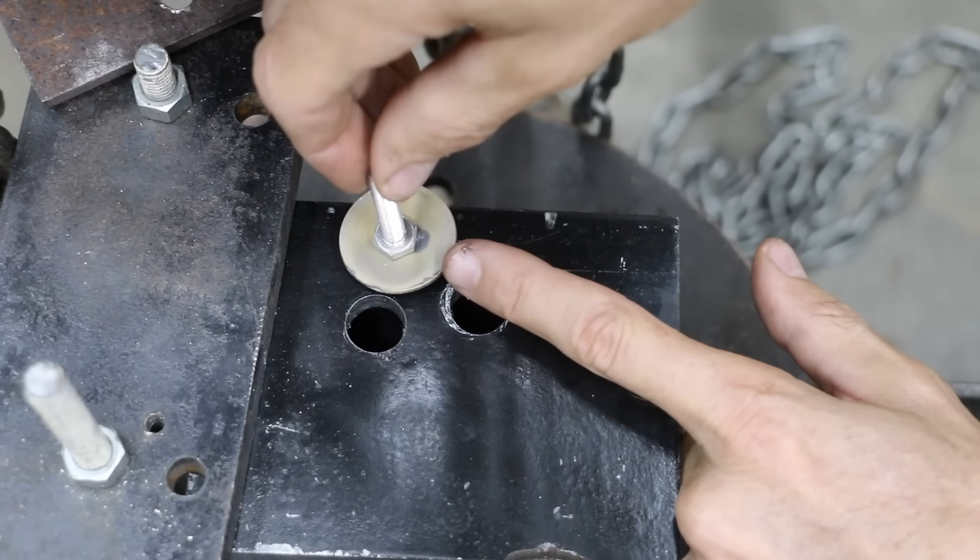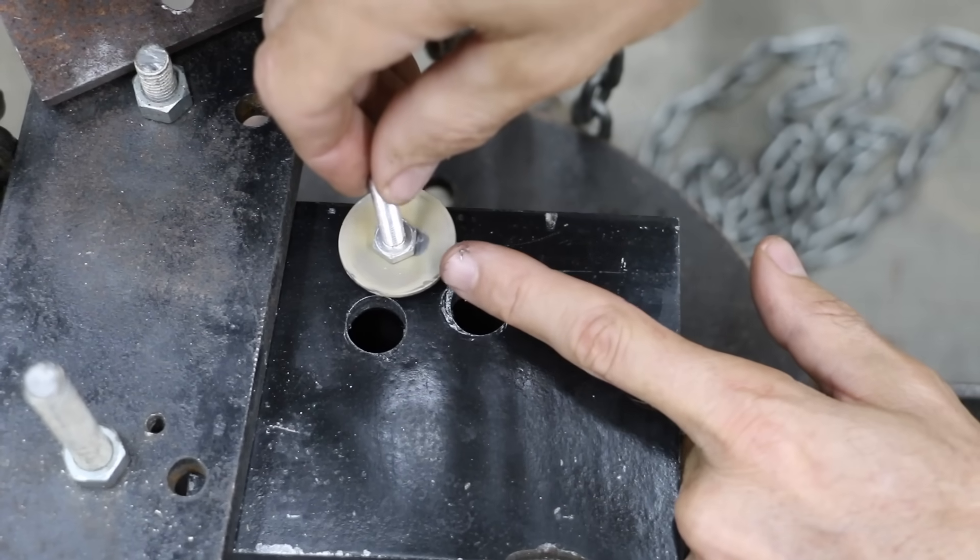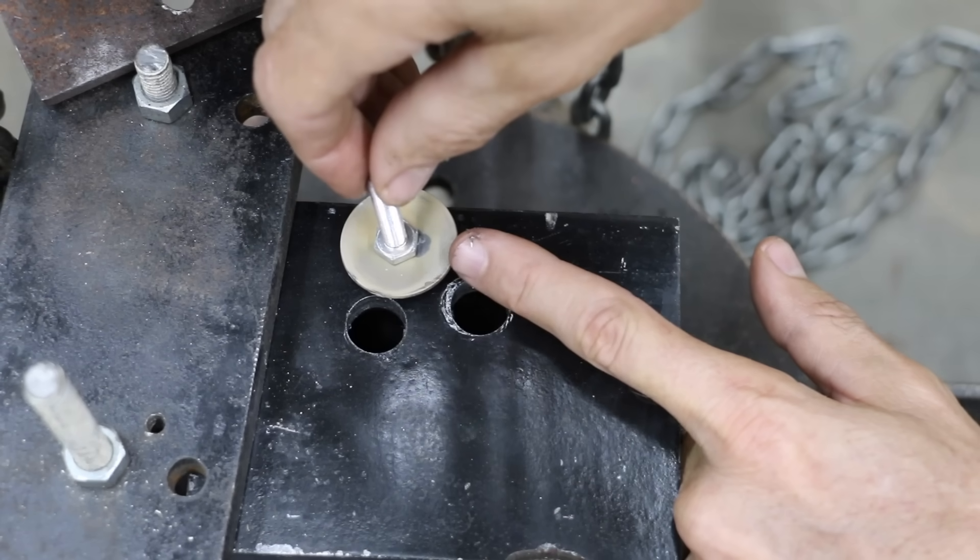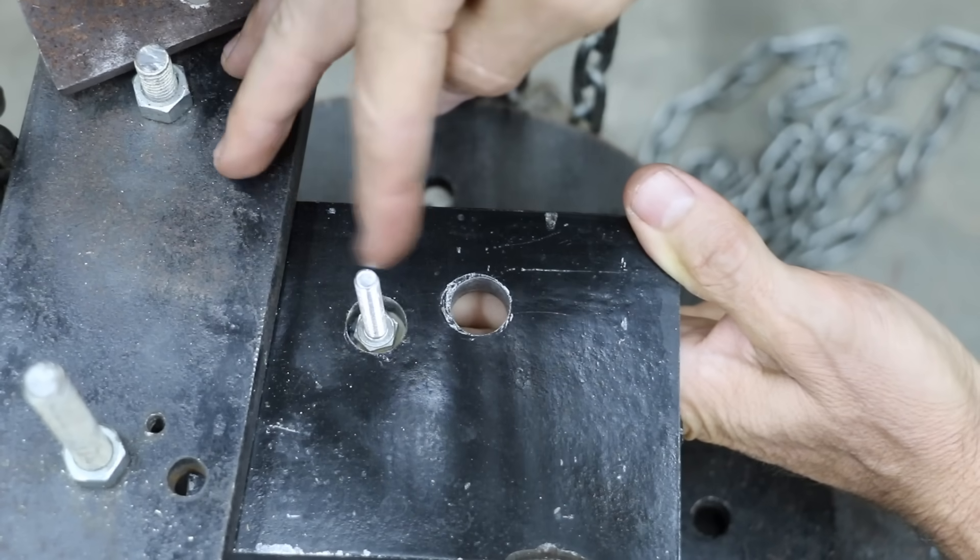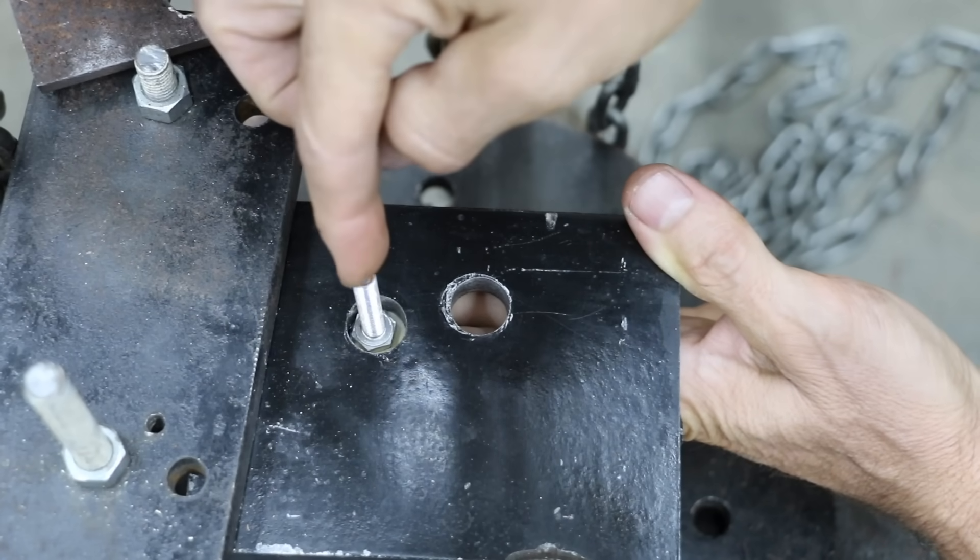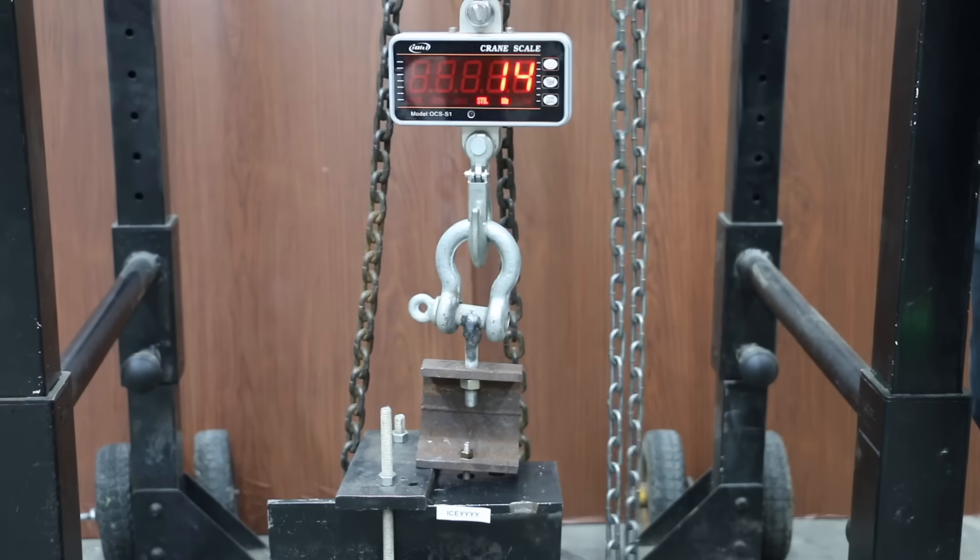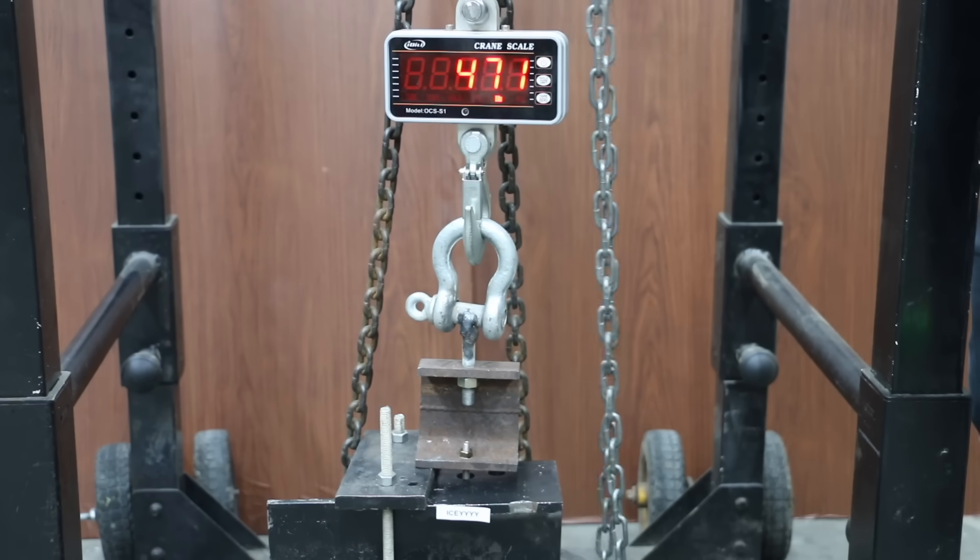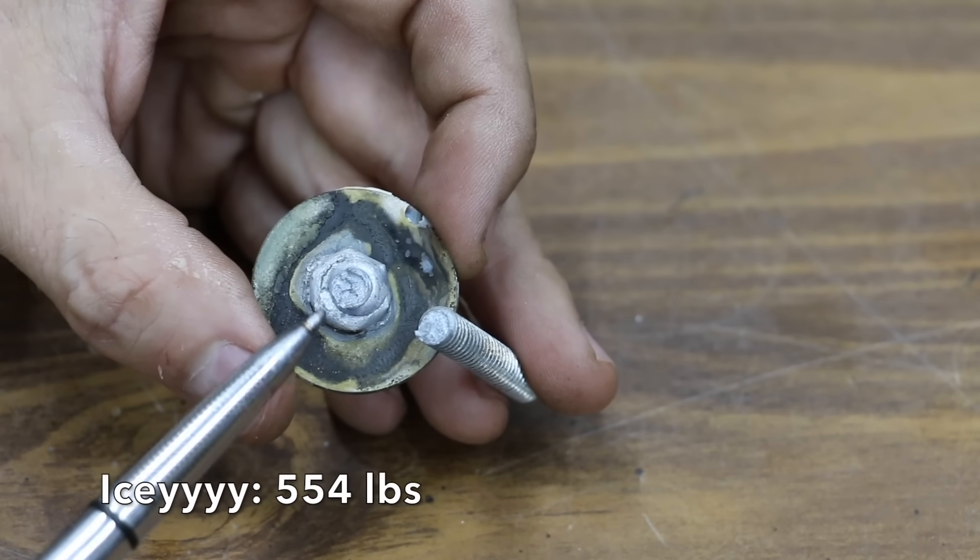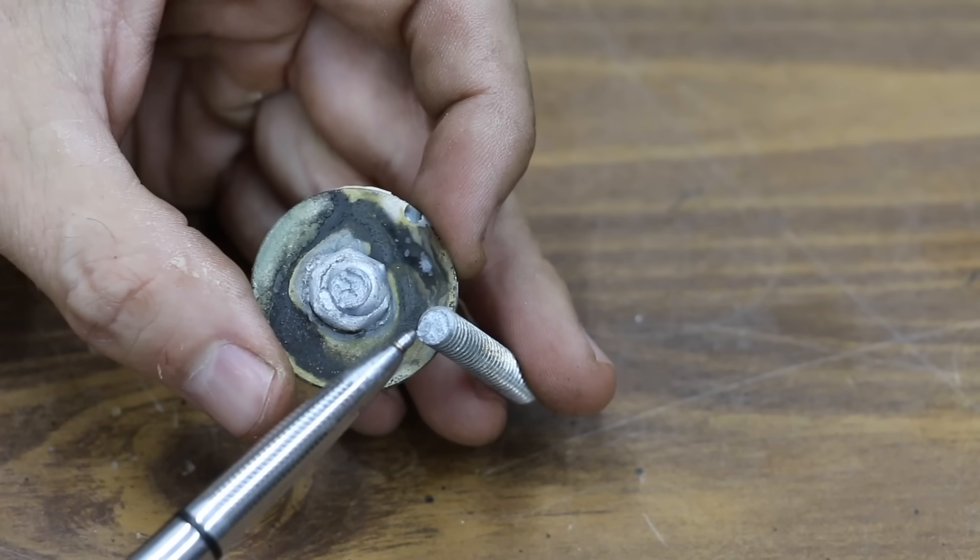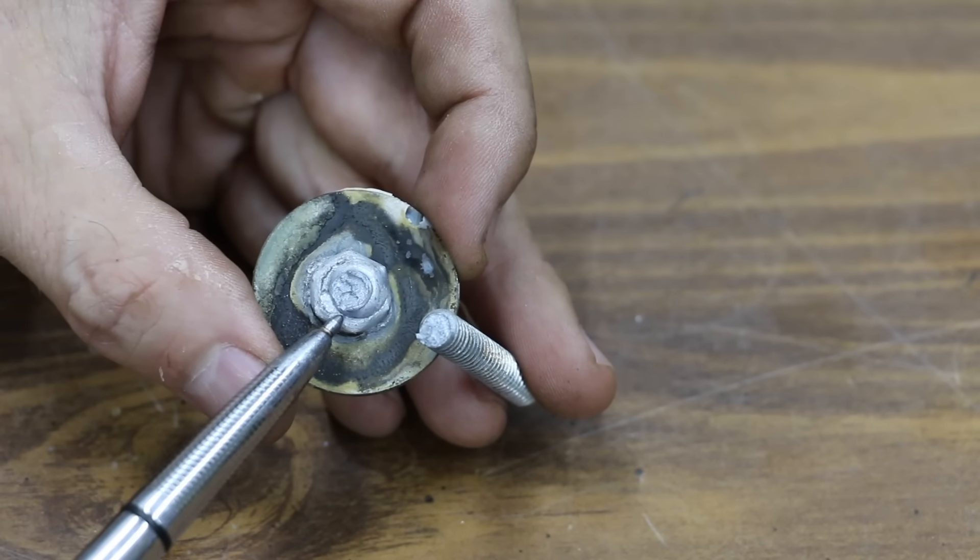In the next test, we'll be pulling this bolt off of this washer. We're going to see how much force it takes and this will tell us how much strength we're getting from our weld. So we've got clearance for the head of the bolt and what we'll do is pull up until this separates. Let's go ahead and test the tensile strength next, beginning with the Icy brand. So 554 pounds is the number to beat. It had a lot of problems getting the metal hot enough for the Icy to melt. And unfortunately, it weakened the bolt to the point where the bolt failed and not the weld.